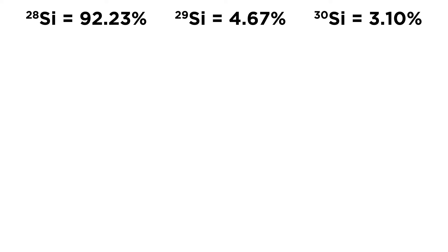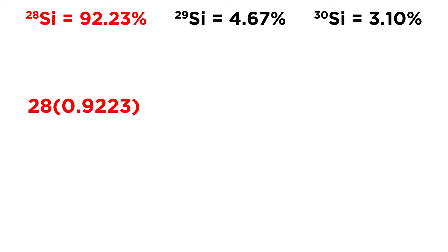So here are the relevant values. To get the average atomic mass, all we need to do is multiply the mass number of each isotope by its abundance. Let's do that now. First we have Silicon-28, so let's put 28 times 0.9223 — that is 92.23% expressed as a decimal.